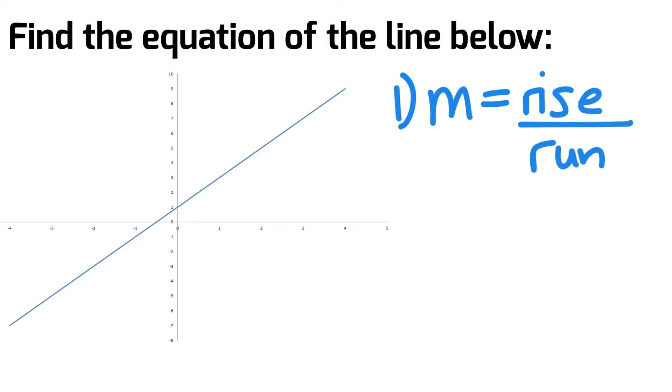Looking at the graph, the rise is the vertical change and the run is the horizontal change. So let's go ahead and mark that in on the graph. Our run is 1 and our rise is 2.